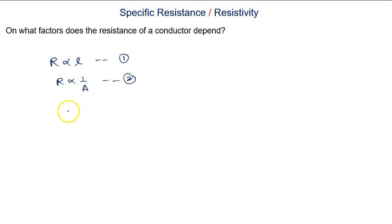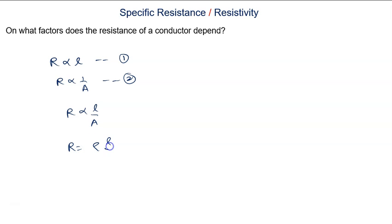Combining both equations, we write R is proportional to L upon A. Removing the proportionality and introducing a constant, we get R = ρL/A, where the constant ρ (Rho) is the constant of proportionality, called the resistivity of the material of the conductor.